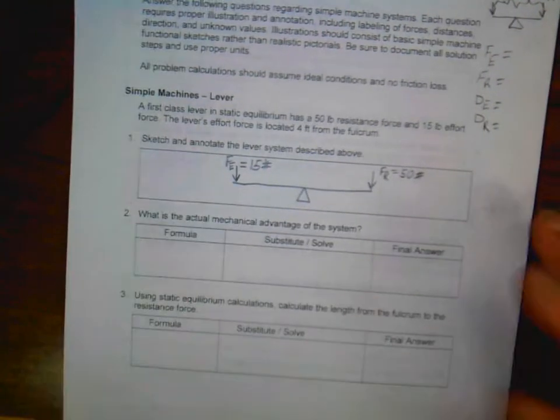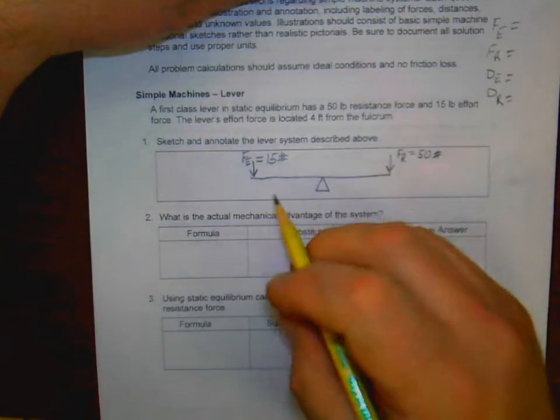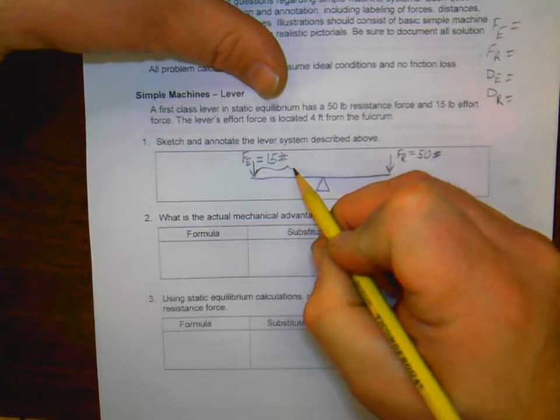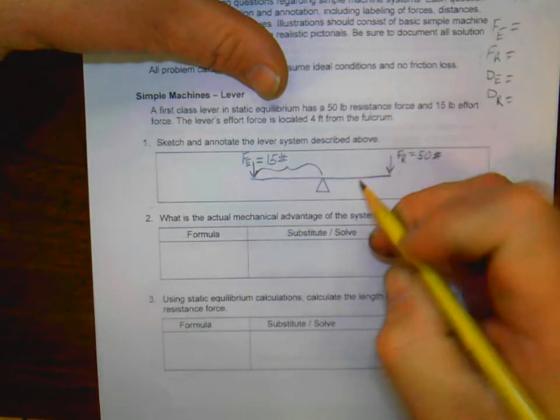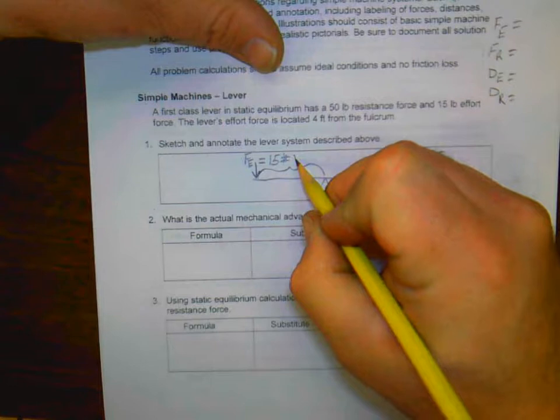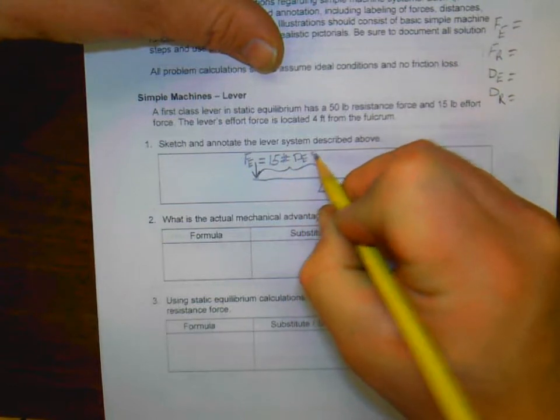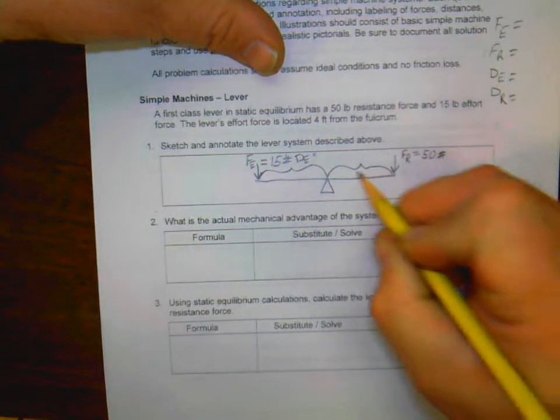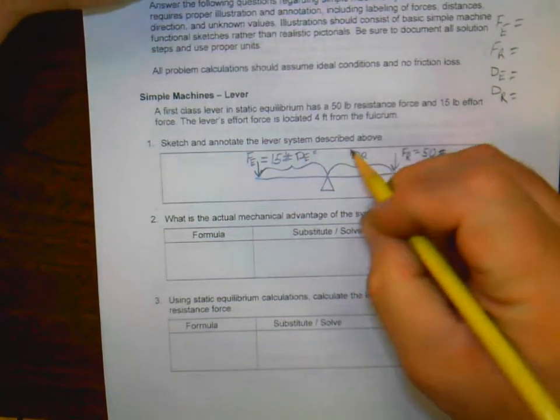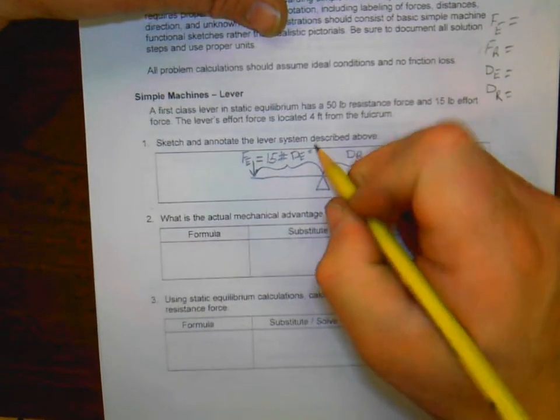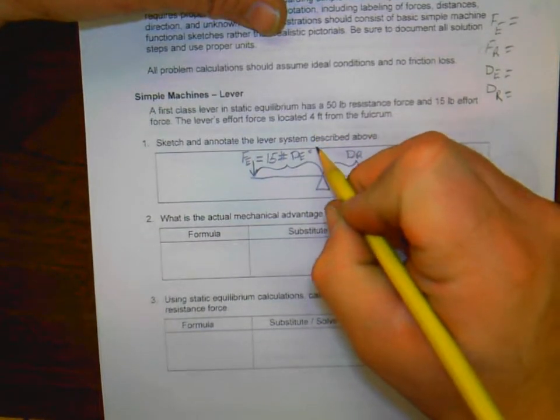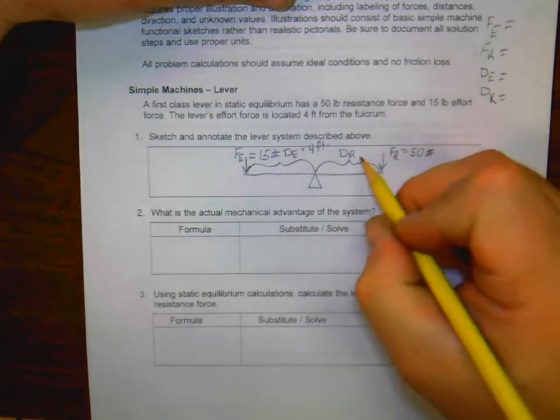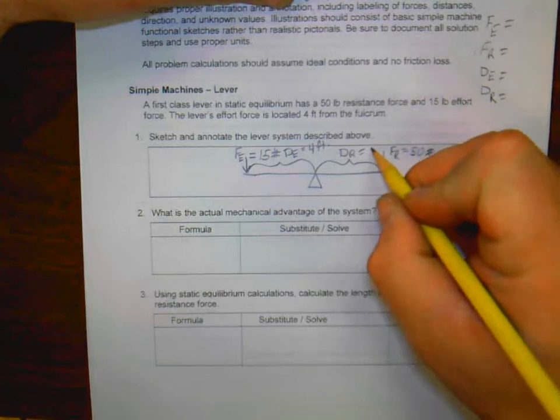And then I'm going to draw, because I need to also maintain my distance. So here is my distance for my effort and my resistance. Now one of these I know, the effort force is located four feet from my fulcrum. The resistance force, I don't know yet. And that's what we're probably going to be looking at.